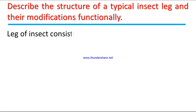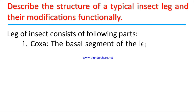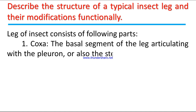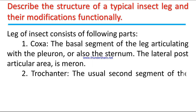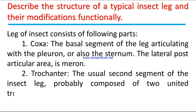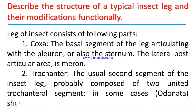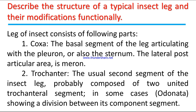The leg of an insect consists of the following parts. Number one: coxa — the basal segment of the leg articulating with the pleuron or sternum; the lateral post-articular area is the meron. Number two: trochanter — the usual second segment of the insect leg, probably composed of two united trochanteral segments, with Odonata showing a division between its component segments.